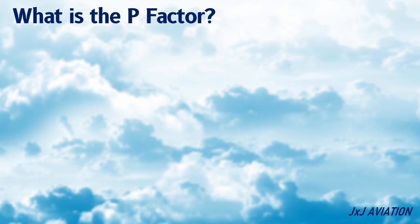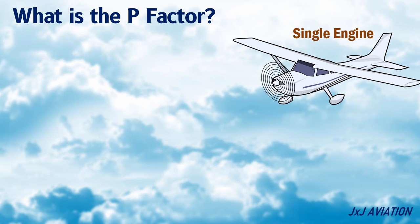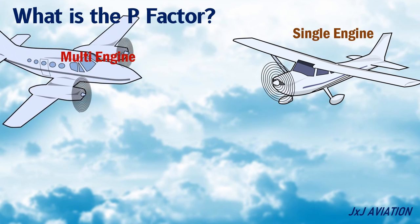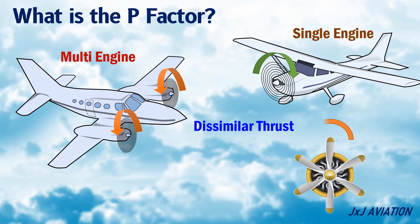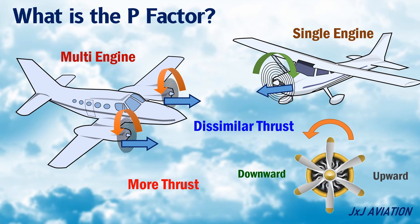What is the p-factor? P-factor is applicable on single or multi-engine, propeller-driven aircraft. P-factor refers to dissimilar thrust produced by the propeller. When the propeller is rotating, the downward-moving blades of the propeller produce more thrust than the upward-moving blades. This causes dissimilar thrust on the propeller engine.